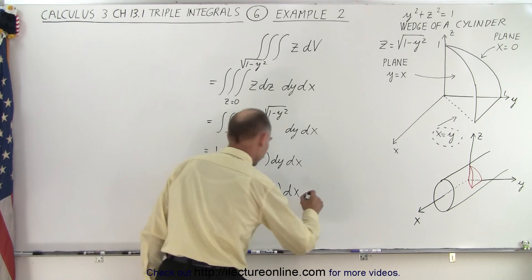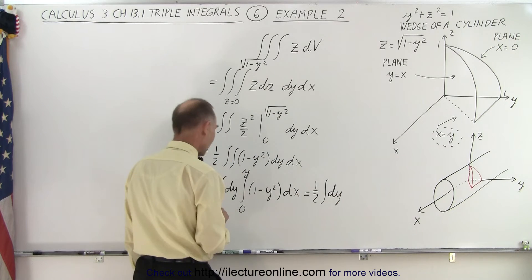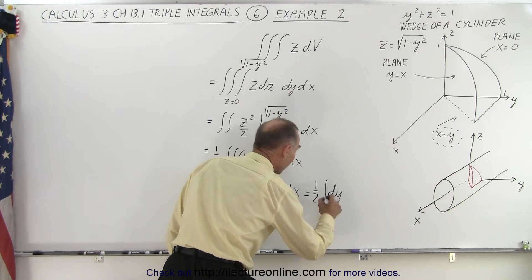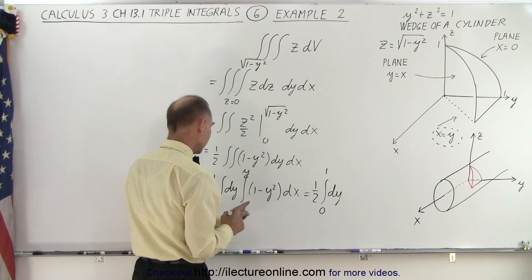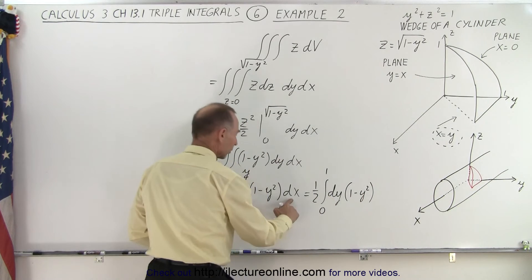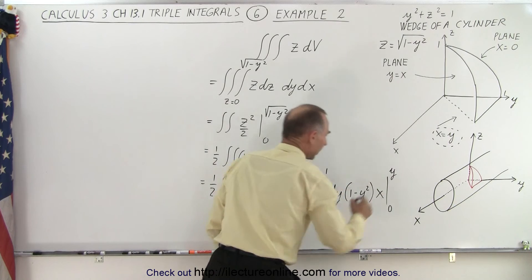So this becomes one half times the integral of dy, we're going to integrate over dy at the end and that's going to be from y equals zero to y equals one, that's straightforward. Then this becomes the quantity one minus y squared, the integral of dx is x, and the limits are from zero to y.